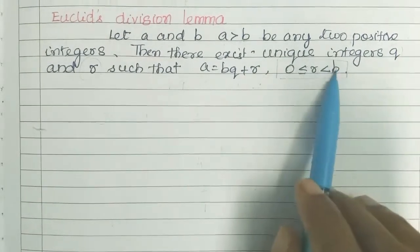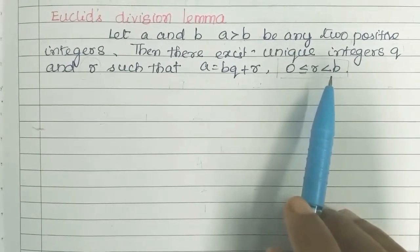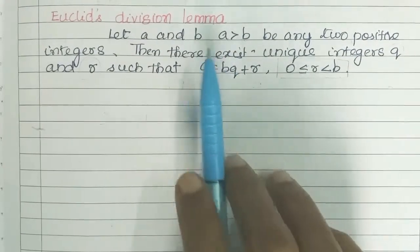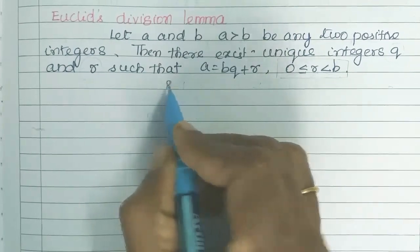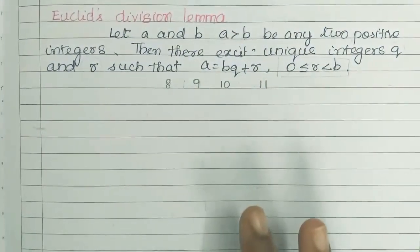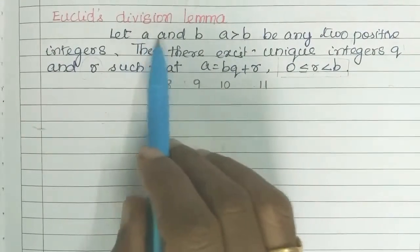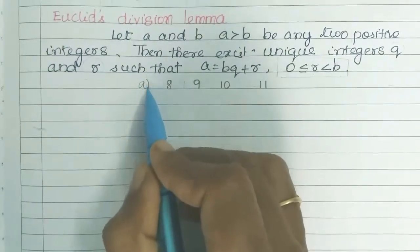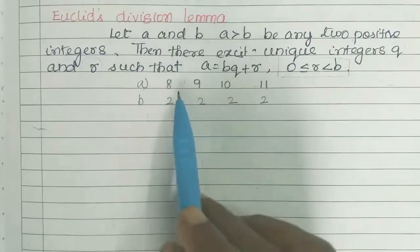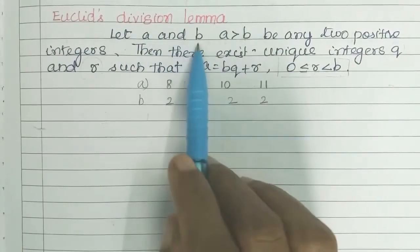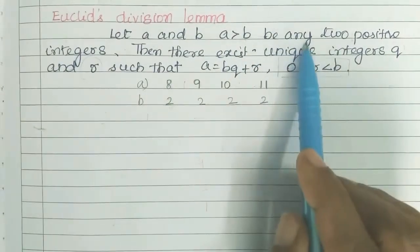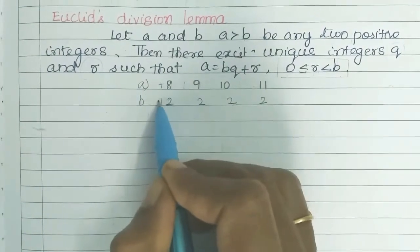Let's see some examples. Let a and b be two positive integers with a greater than b. We need two positive integers for this. There exist unique integers q and r such that a equals bq plus r.